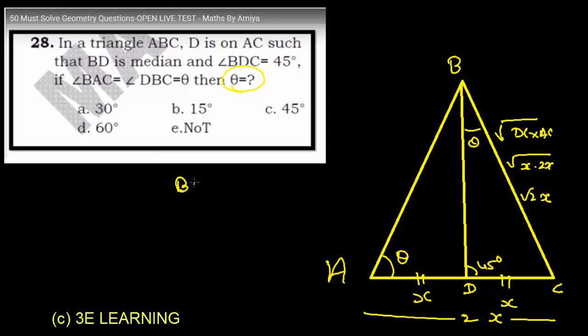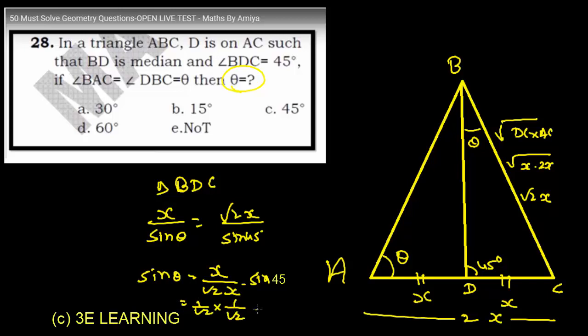Now we have to find angle theta. Using the sine formula in triangle BDC, X over sine theta equals root 2X over sine 45 degrees. So sine theta equals X over root 2X times 1 over root 2, which equals 1 over 2. Therefore, theta must be 30 degrees, and this is our answer.